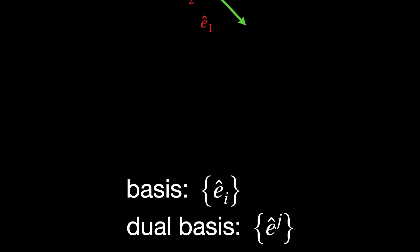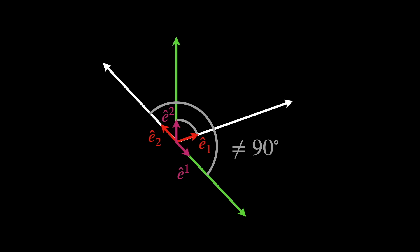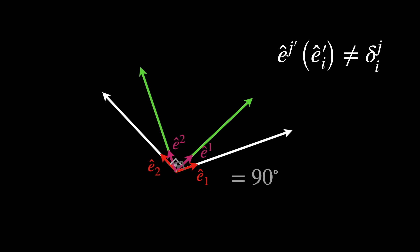Now suppose that we change the contravariant basis with a rotation. The co-vectors in the dual basis can't just be unchanged, otherwise the condition for duality would not be satisfied. The new covariant basis still has to be orthogonal to the new contravariant basis, except for their own individual counterparts, of course. And that's why we say that the dual, so covariant basis, transforms along, so together with the original, so contravariant basis, in order to maintain consistency.